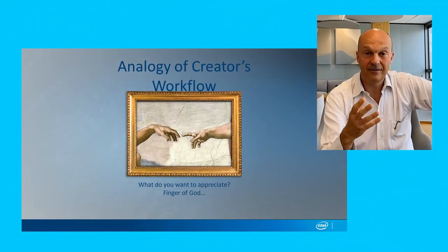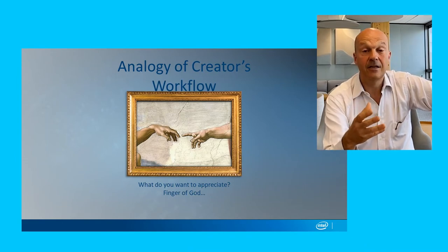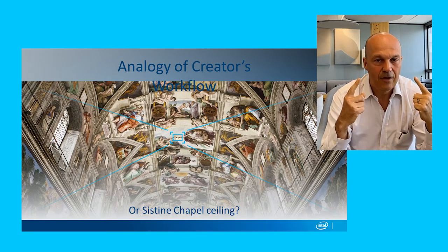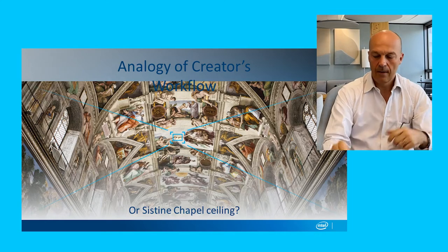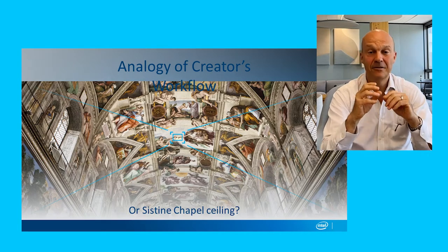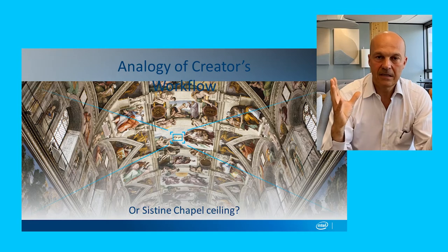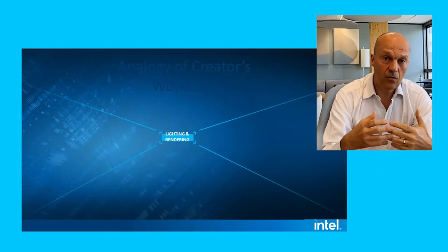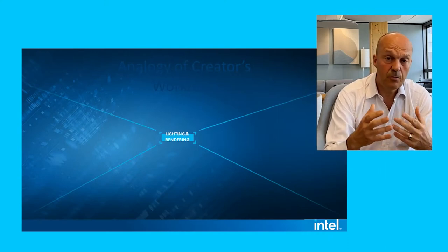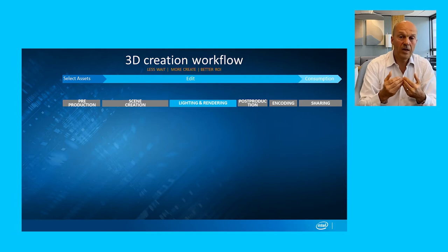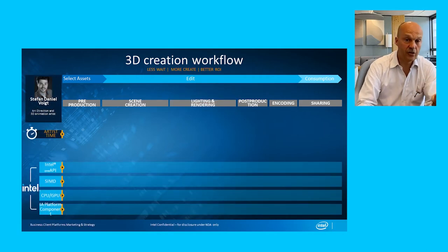The Finger of God is a painting. In Italy, Michelangelo painted the Sistine Chapel. When I went there and saw the Finger of God painting, I thought it was huge — but actually, when you see it, it's so small you barely see it. When you look at the Sistine Chapel, beauty is everywhere. I use this analogy and worked with a creator called Stefan Voigt to see the beauty of his full workflow. I put in perspective many of the software that Intel optimizes with developers — in this case, Maxon, Epic, and photogrammetric software called Quixel.